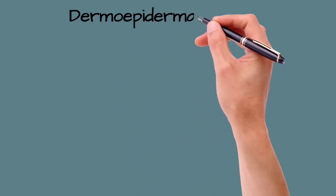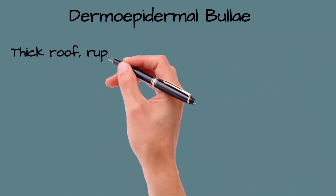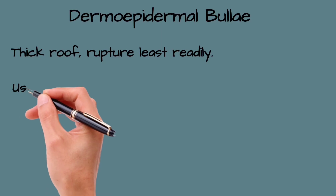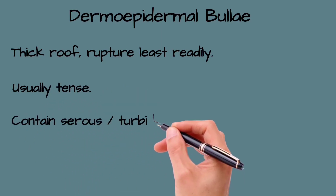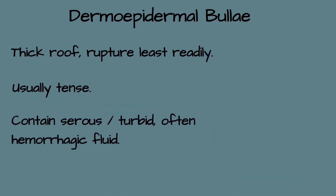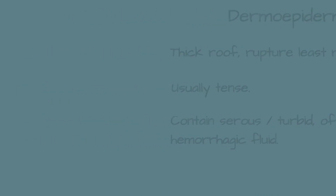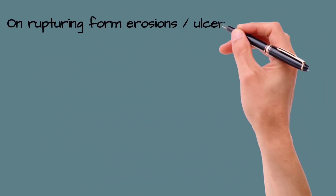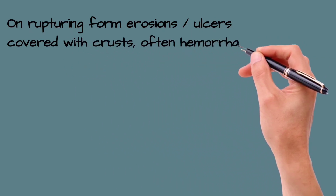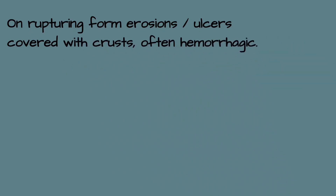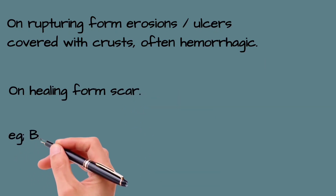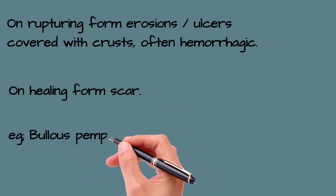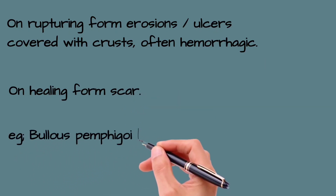Dermoepidermal bullae have a very thick roof, so they rupture less readily. They are usually tense and contain serous or turbid fluid which is often hemorrhagic. On rupturing, they form erosions and ulcers covered with crusts which are often hemorrhagic, and on healing they form scars. An example is bullous pemphigoid.